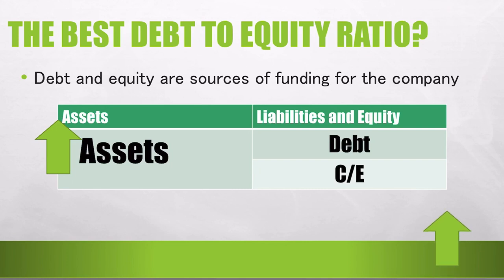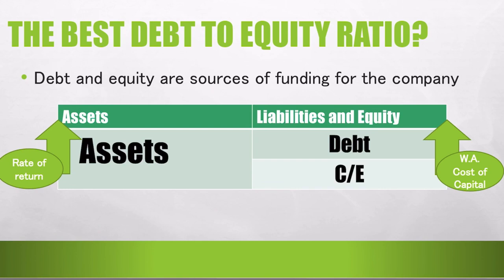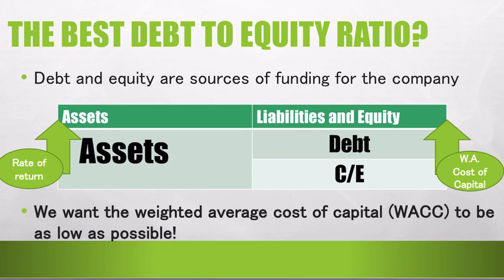Whether we are to use debt or equity would depend on what its impact on the weighted average cost of capital, WACC, would be. Take note, if the company's assets are utilized, it will earn a rate of return. On the left side of the balance sheet, we would see that assets would earn returns — that is an inflow. But on the right side of the balance sheet, having debt and equity capital would incur costs for the company — that's the cost of capital, an outflow. Of course, we want a greater inflow relative to the level of outflow.